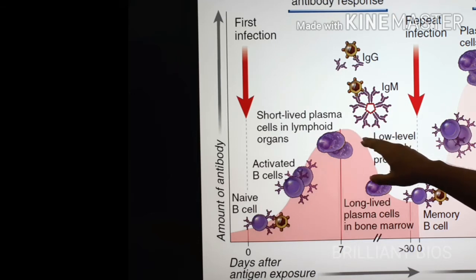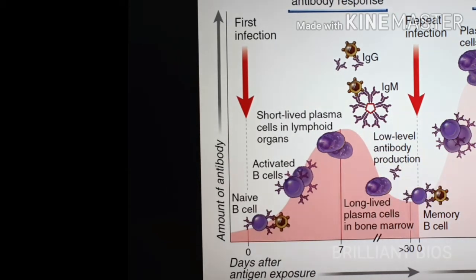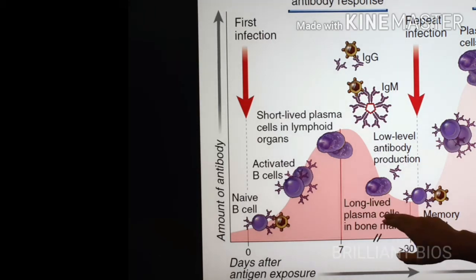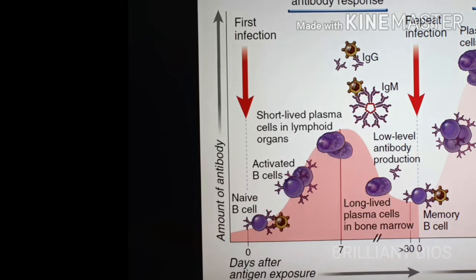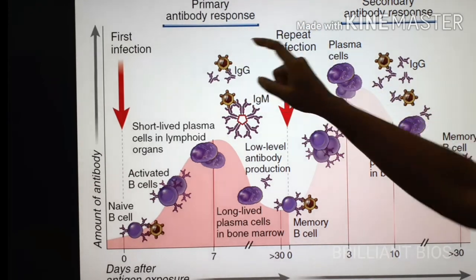Our immune system gives a gift every time there is a new infection — and that gift is long-lived plasma cells that can reside in the bone marrow and remain for years. If there is a second or repeat infection of the same pathogen or antigen, the memory cells react. These can be memory B cells or memory T cells.